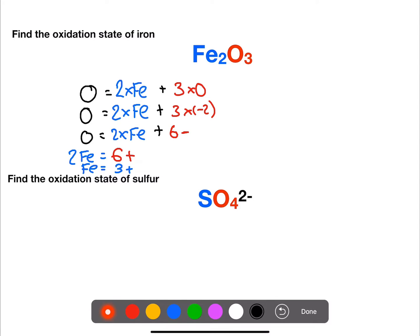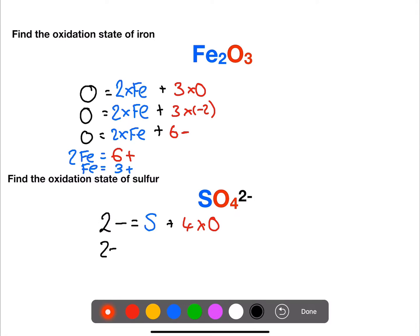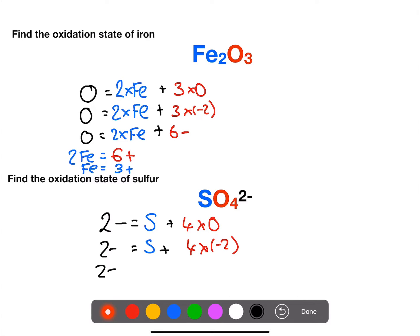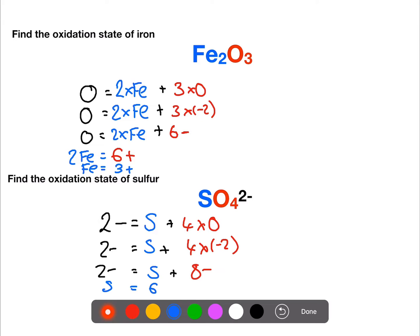We can do the same for sulfur within the sulfate ion. This time we have an overall charge of minus two. We have one sulfur and four oxygens. We know the oxidation number of the oxygens — that's going to be four times negative two. If we rearrange this, then sulfur equals plus six.